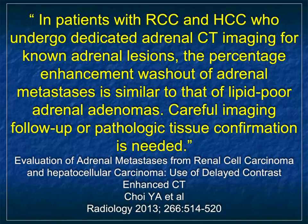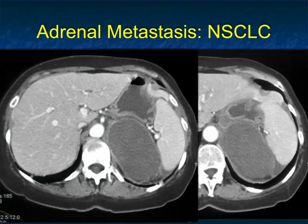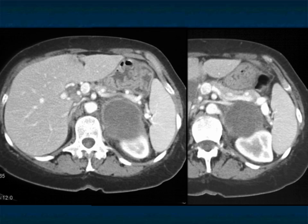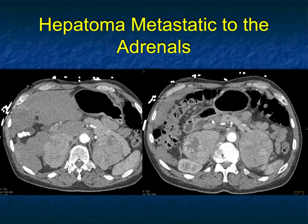In patients with renal cell or hepatoma who get dedicated adrenal CT, the percentage enhancement washout of adrenal mets is similar to that of lipid-poor adenomas. The point is these lesions are very vascular, and vascular lesions can wash out like pheos — giving a good washout value that might make you say it's a lipid-poor adenoma. So if you have a history of RCC or HCC, you cannot use that washout value in determining what a lesion is.